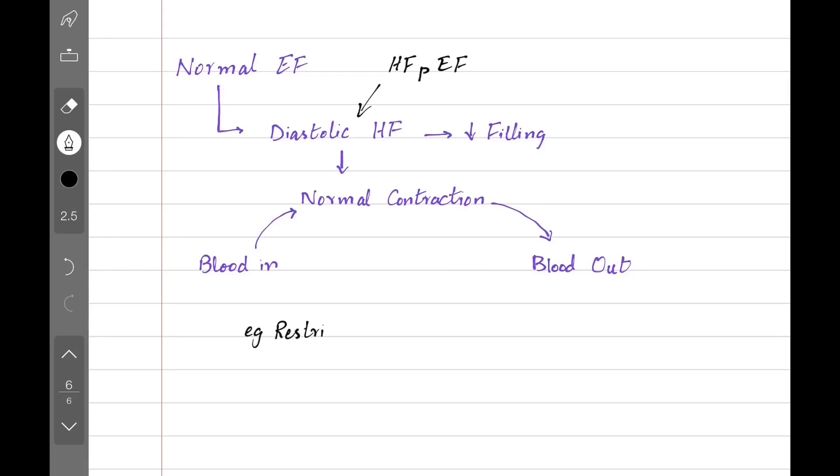Remember, not all types of heart failure give us reduced ejection fraction. Some can have normal ejection fraction. For example, diastolic heart failure has problem with filling but it can contract just fine. So whatever blood comes in, it can pump it out. This type of heart failure is called heart failure with preserved ejection fraction. An example is restrictive cardiomyopathy where heart muscle becomes stiff and can't be filled.